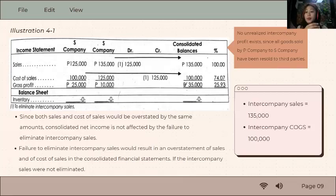There's no profit left within the group. You only need to eliminate the sales and purchases. Unlike in our next example, in the next video actually, we'll have something remaining because let's say only 60% was sold, so there's a remainder—that's when unrealized profit comes in.